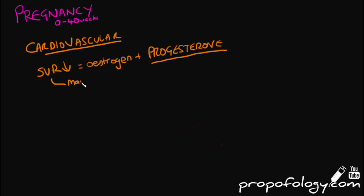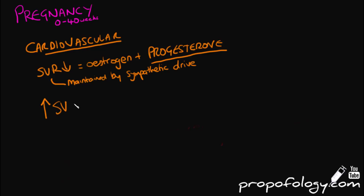Progesterone gets blamed for everything during pregnancy. However, maintenance of the systemic vascular resistance is governed by sympathetic drive, and that's diminished by central neuraxial blockade like spinal anaesthetics.